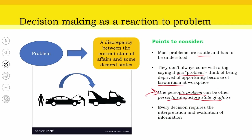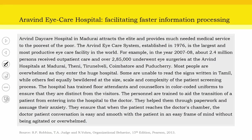Every decision requires interpretation and evaluation of available information — the availability and extent of information is vital. Now let us quickly look into a situational analysis of Aravind Eye Care Hospital facilitating faster information processing, to see how effectively problems are identified and how smoothly processes are streamlined.